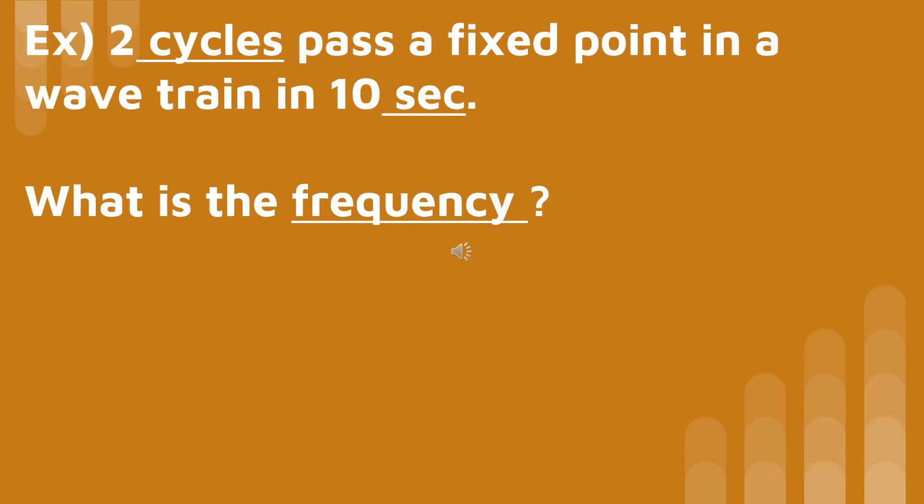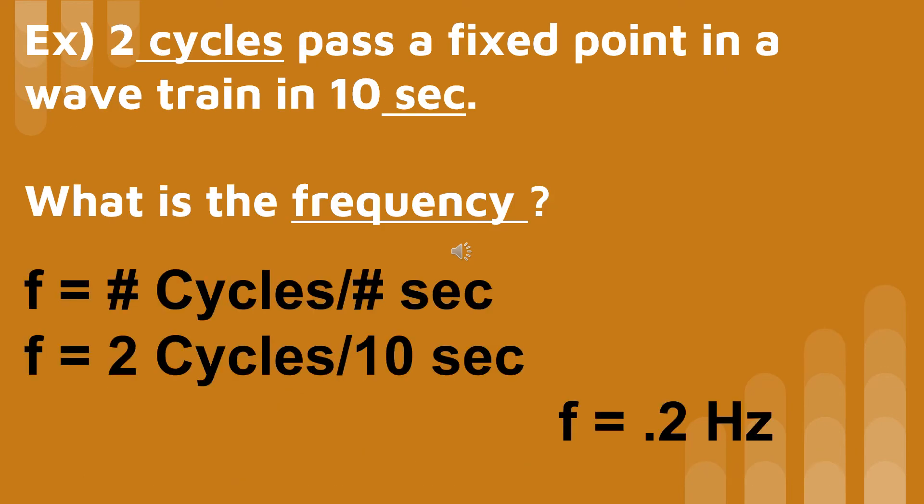Two cycles pass a fixed point in a wave train in ten seconds. What is the frequency?